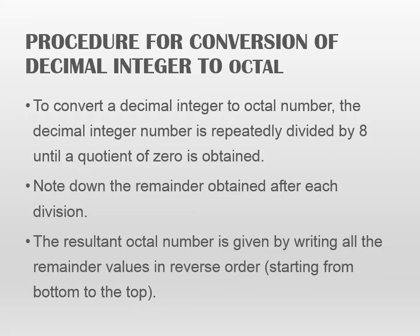Let us first understand how to convert a decimal integer number into an octal number. We are going to divide it repeatedly by 8, up to the point where the quotient is 0. At each division step, we note down the remainder values. We note the remainder values because when we reverse the order, we will write them from bottom to top. That will form our resultant octal number.